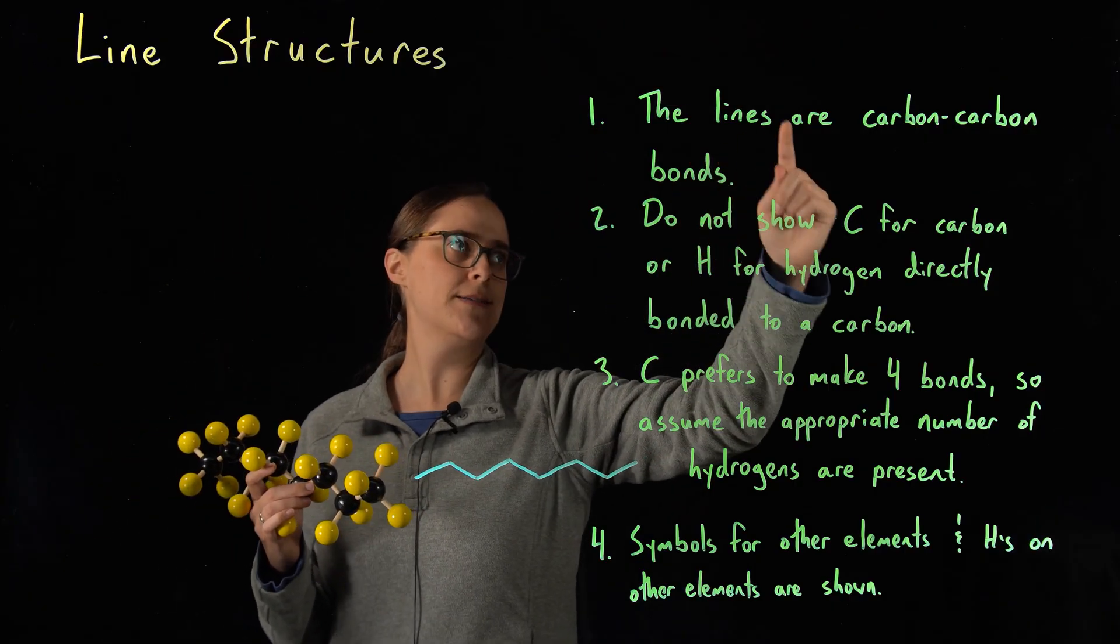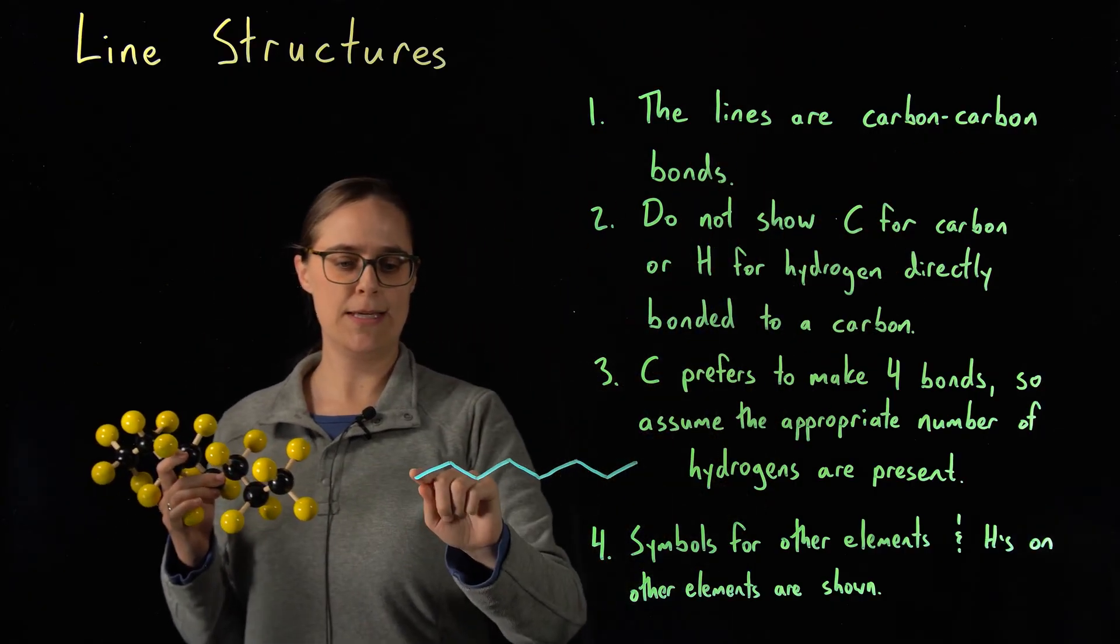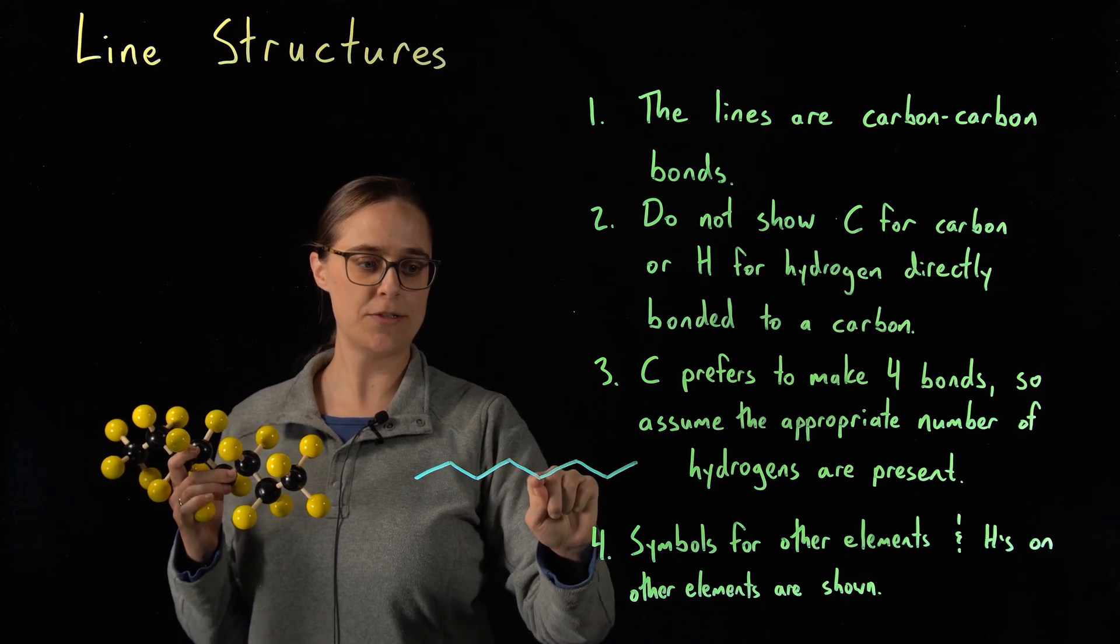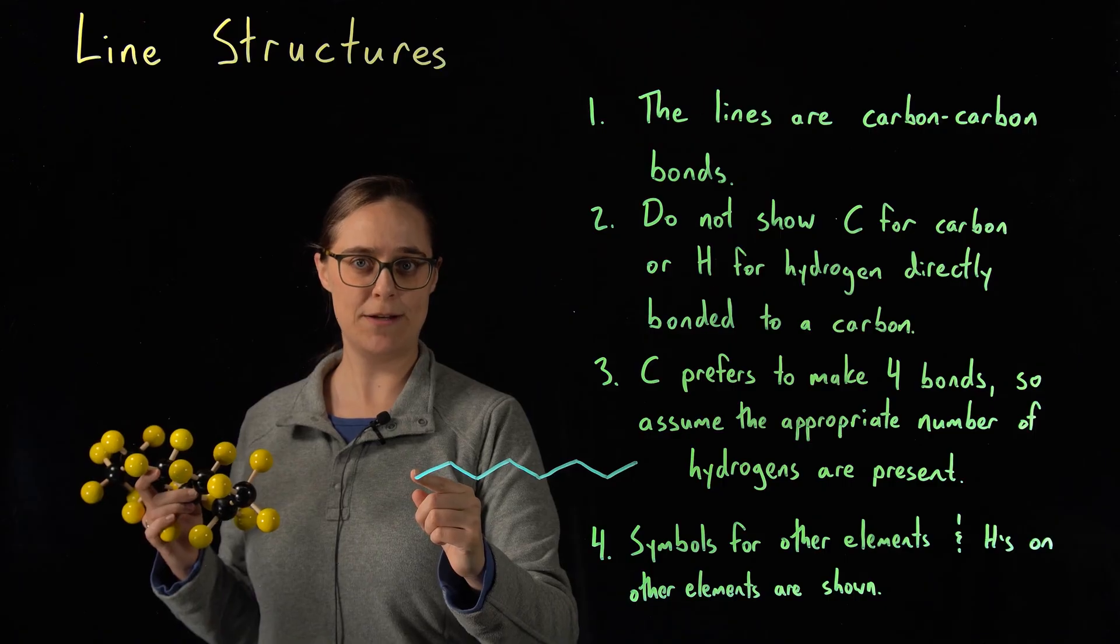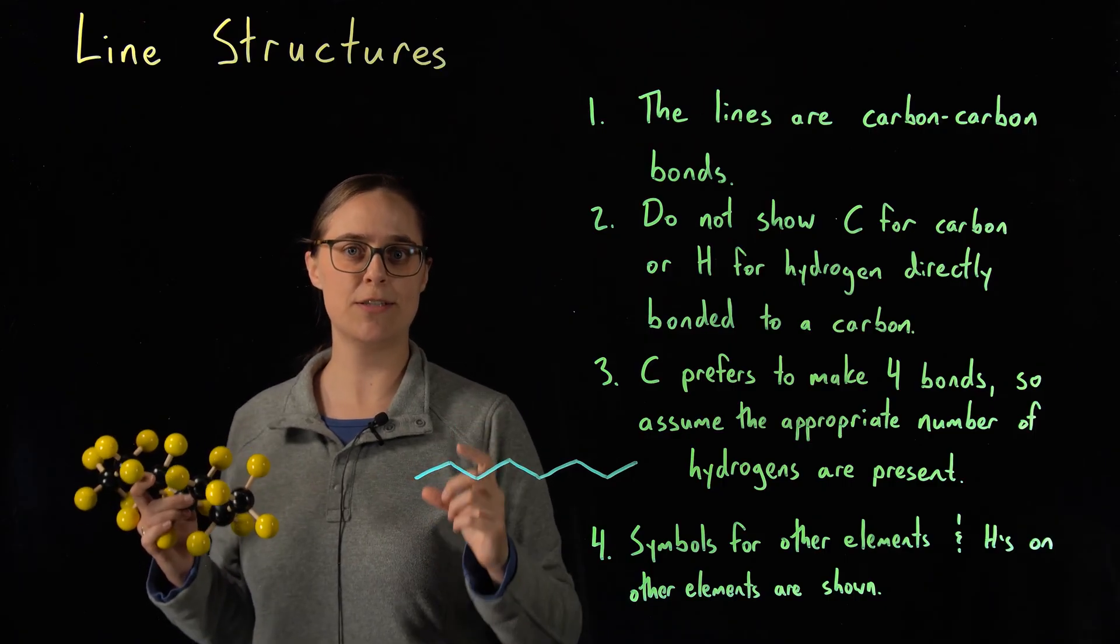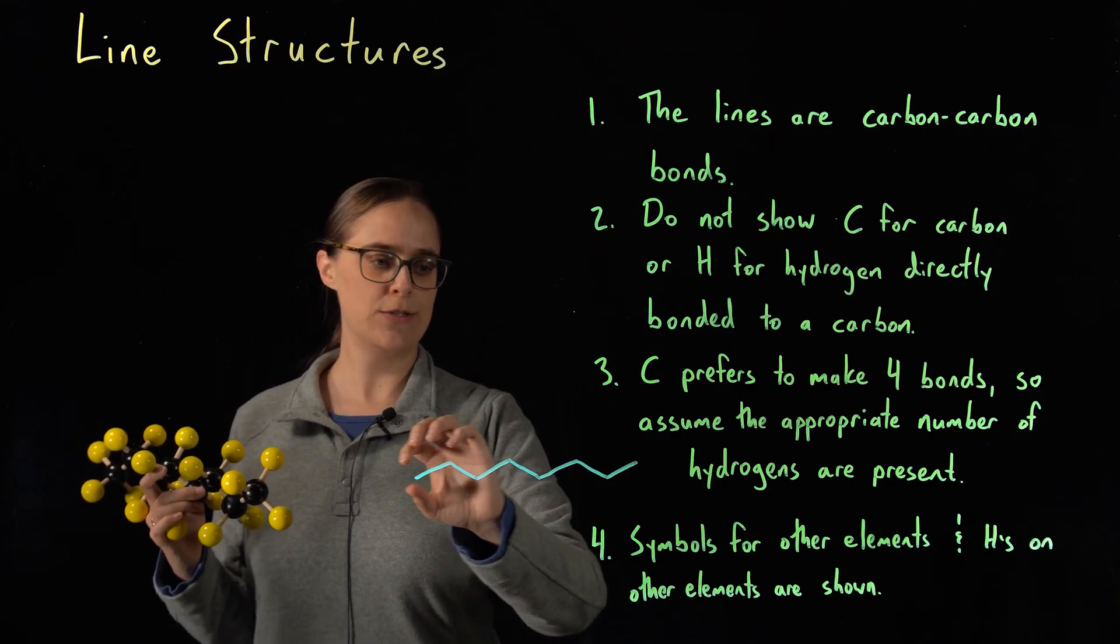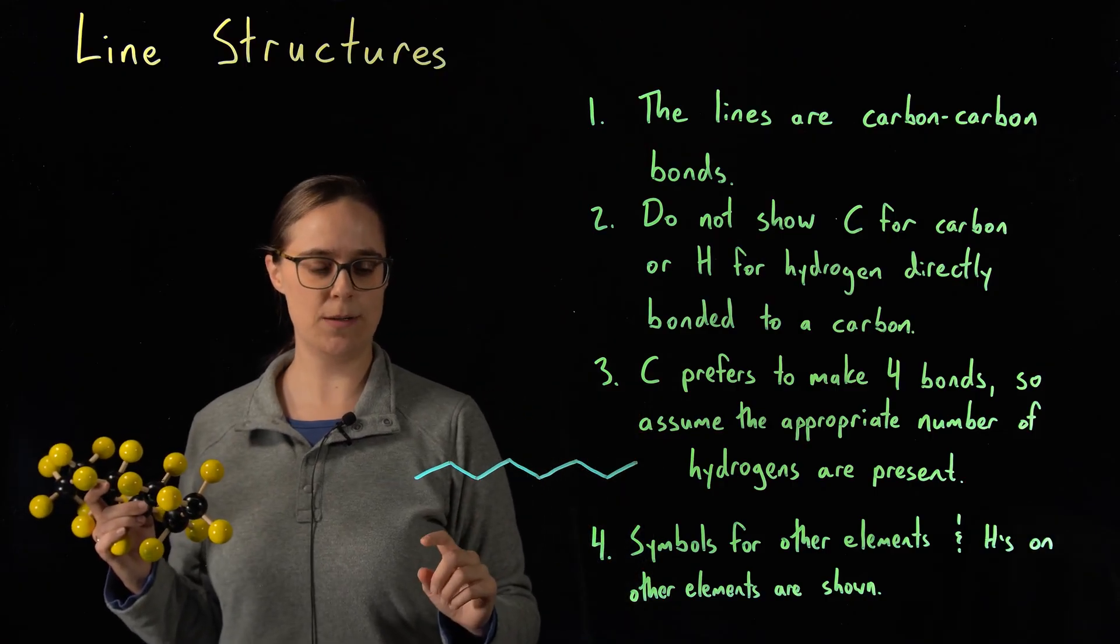Rule one, the lines are carbon-carbon bonds. In other words, each of these lines is a bond between carbons. That means the very beginning and end of each line and each vertex represents a carbon.